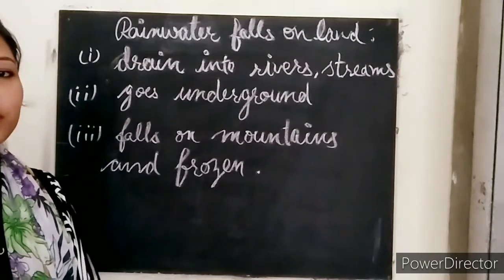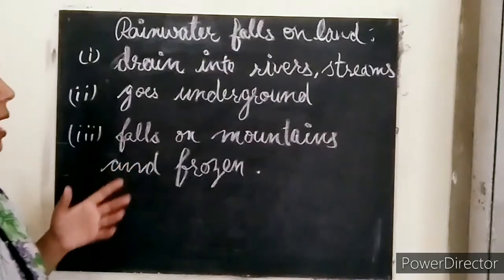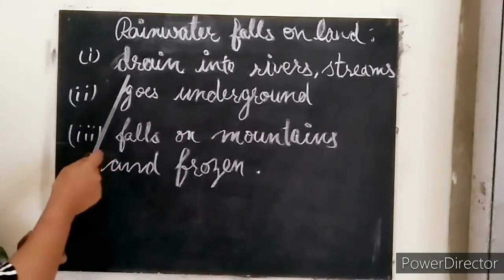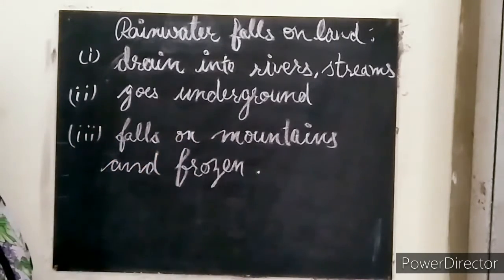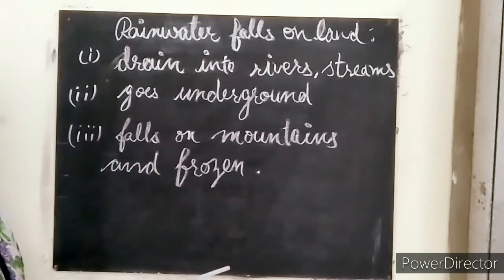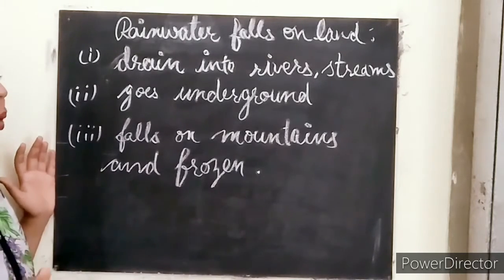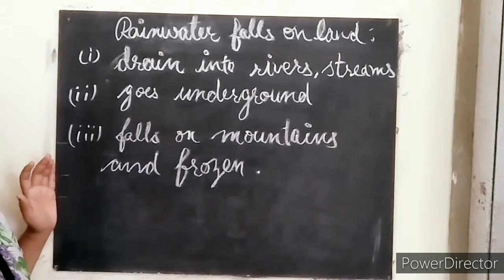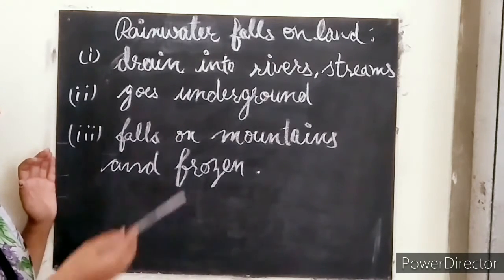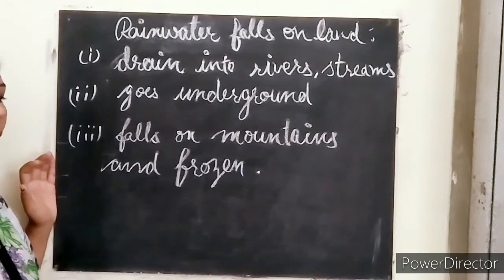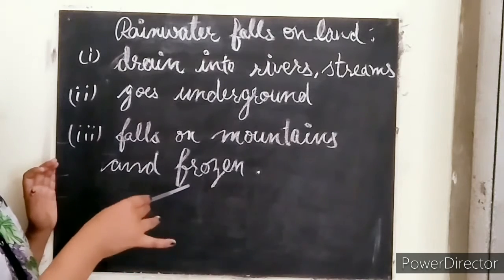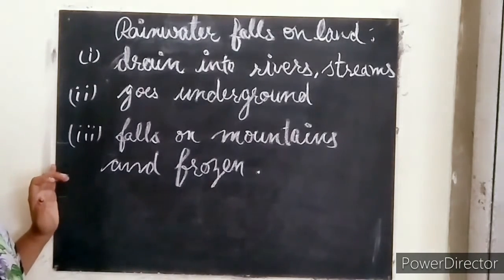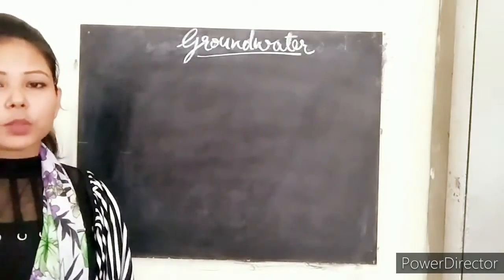When rainwater falls, it goes to several places. First, it can drain into rivers and streams and continue moving in the water cycle. Second, it goes underground and becomes groundwater. Third, rainwater also falls on mountains and hills, gets frozen, and that frozen water is later evaporated by the sun and then falls again as rain.